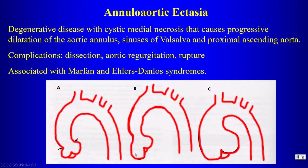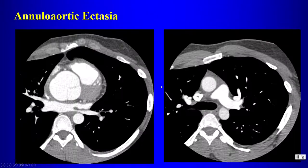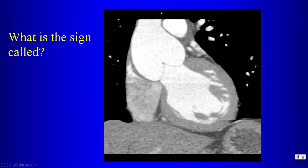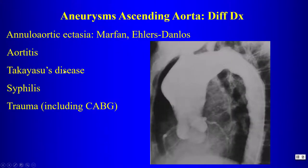The normal sinuses of Valsalva transition at the sinotubular junction to the ascending aorta. With annuloaortic ectasia, we see dilated sinuses of Valsalva and a dilated ascending aorta. Dilatation near the aortic root can cause aortic valvular regurgitation. On coronal reformatted CT, a characteristic finding is the tulip bulb sign, which is the sign of annuloaortic ectasia. This can be associated with Marfan's syndrome.